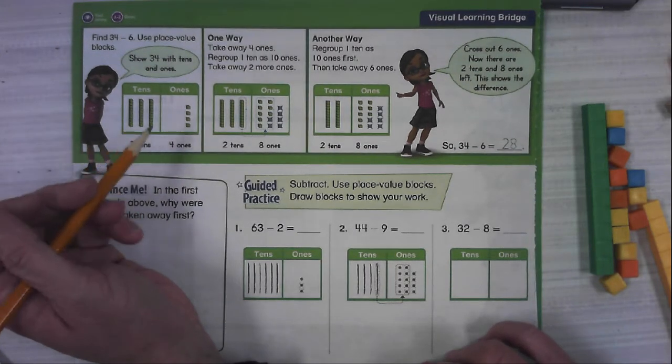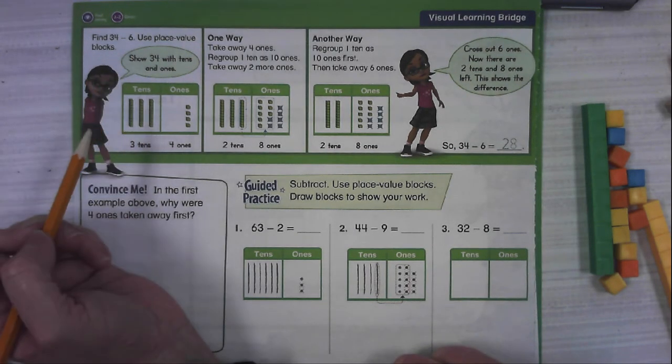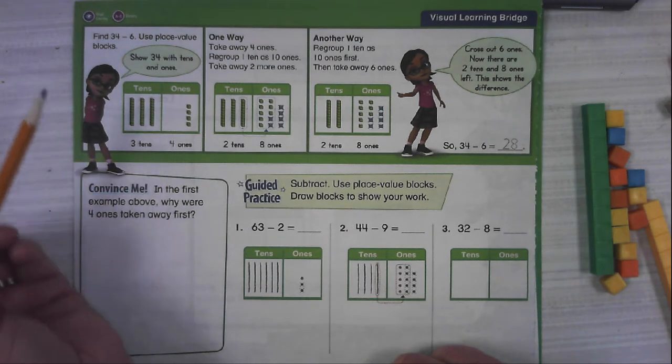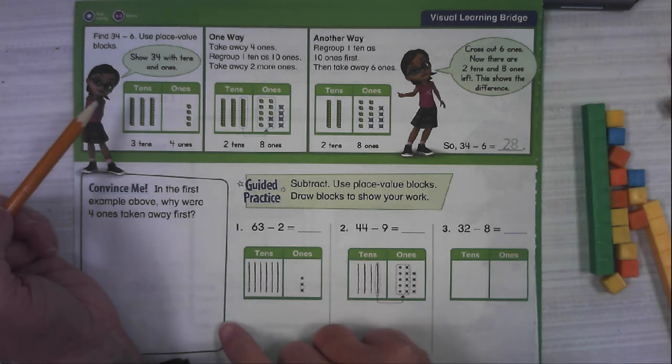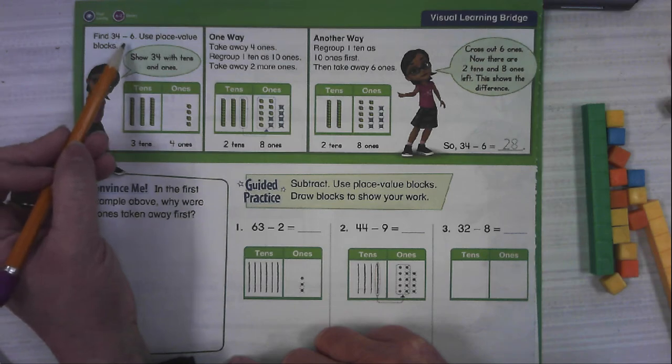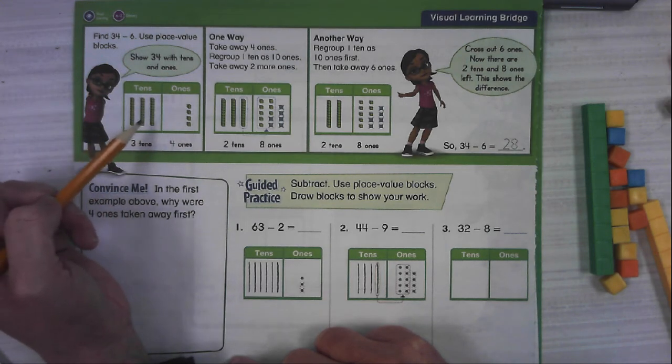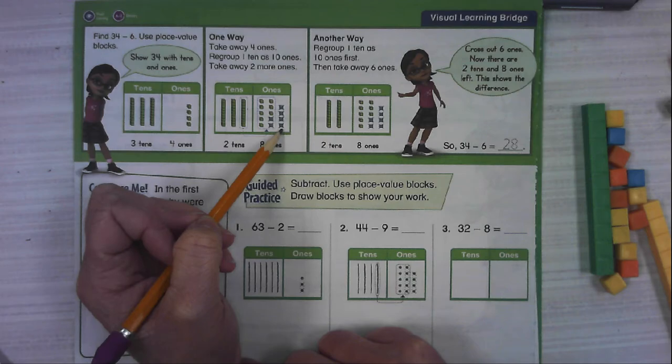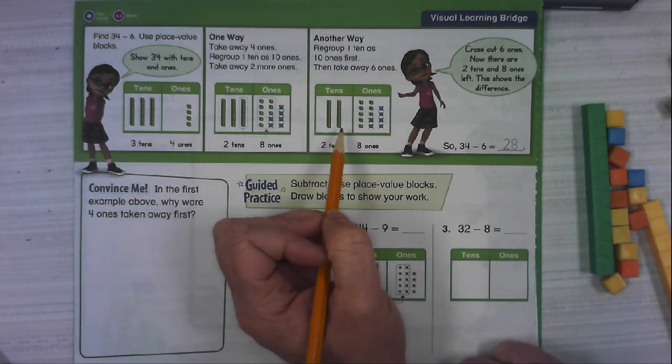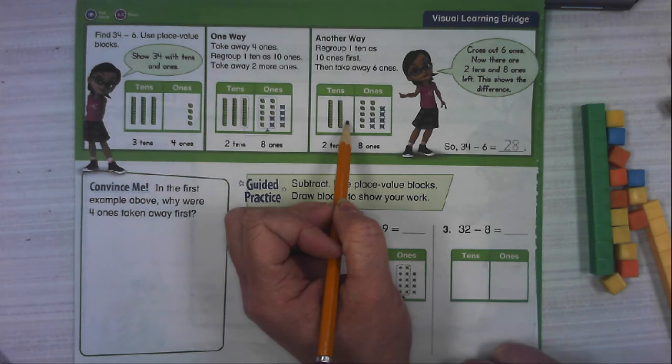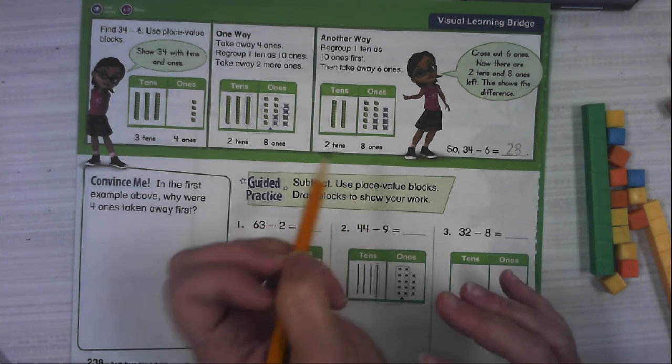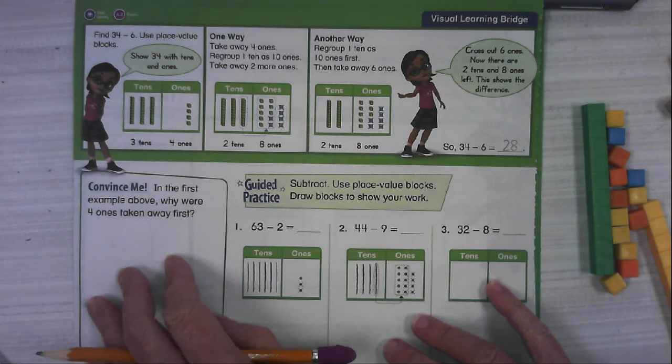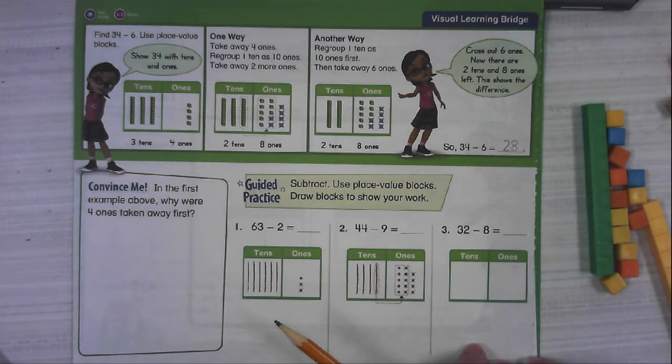So here's our friend walking us through what we just did with 34 minus 6. In the first example here, I'm going to skip to the convince me. Why did they take away the 4 ones first? So we've got 34 minus 6. They modeled only 34 and they took away 4 ones here, and then realized, uh-oh, I need some more, and took away these 2 ones. This shows kind of what we did on the front where we knew that we were going to need more. We went ahead and regrouped first. It does not matter at all. So if you pause the video and answer this and explain what happened, then hit play and we'll continue with these 3 right here.